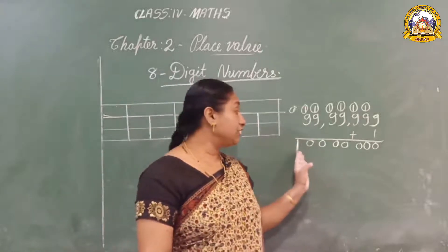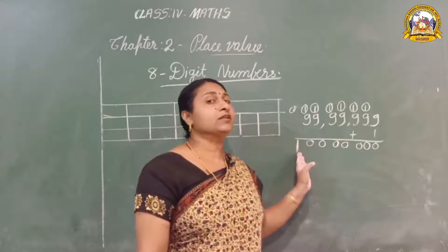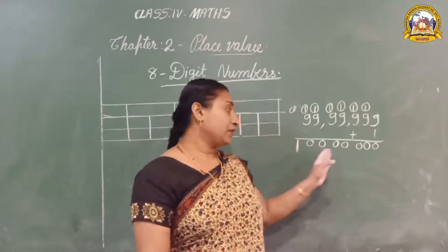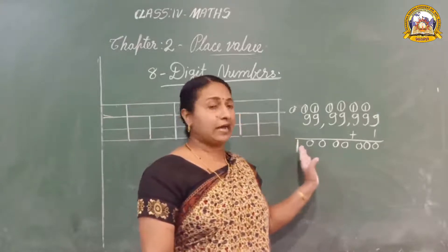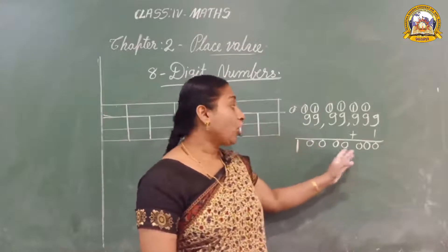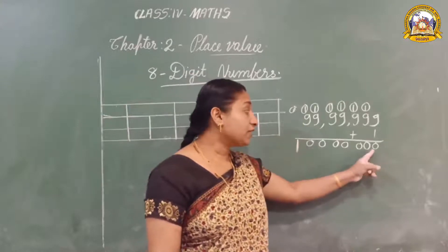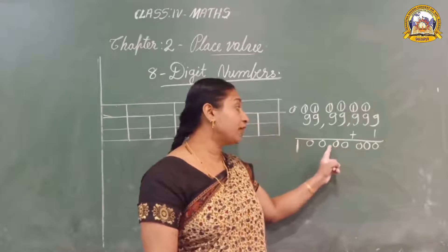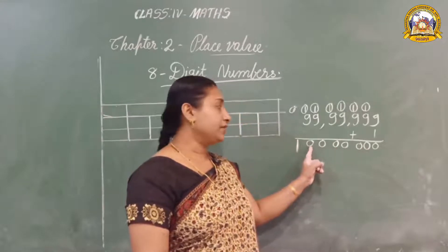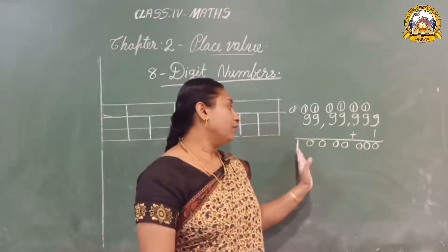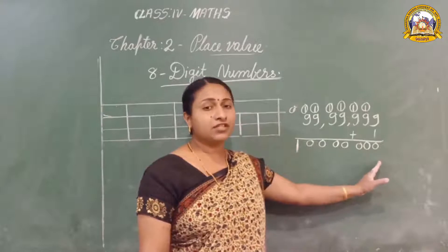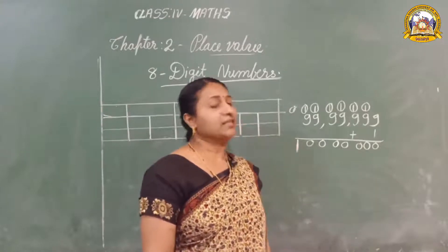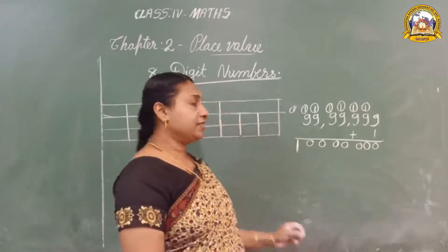Do you know what this is? It is one crore. Say: one crore. Let us arrange these digits. How many zeros are there? One, two, three, four, five, six, seven — seven zeros. One and seven zeros. It is the smallest eight-digit number.